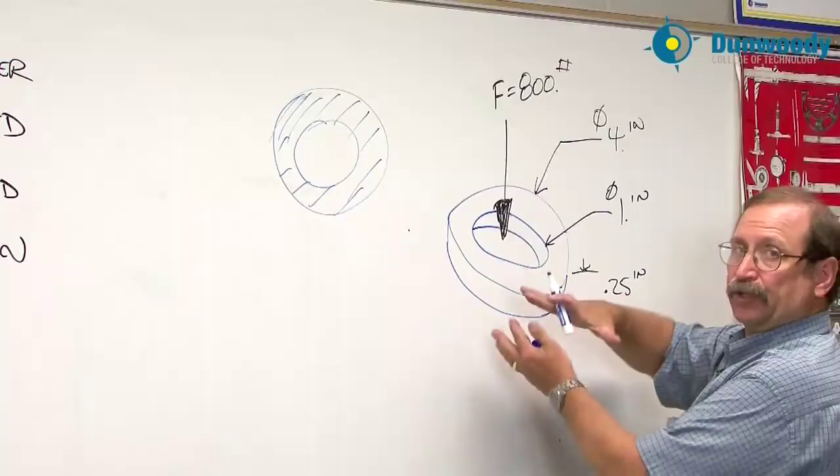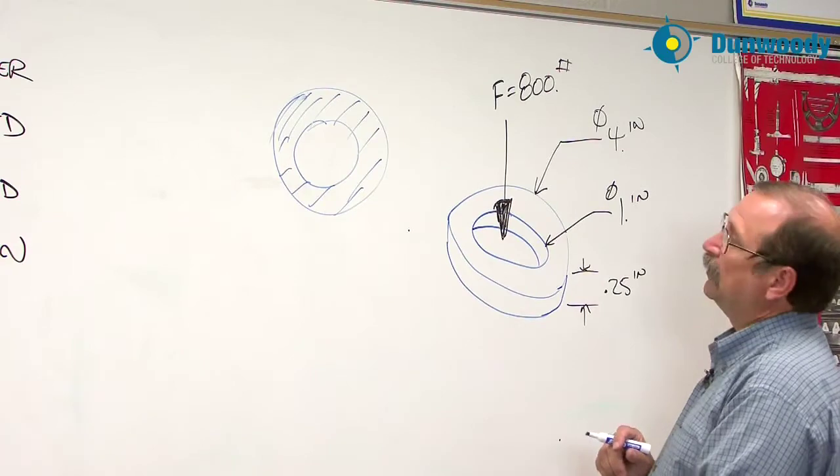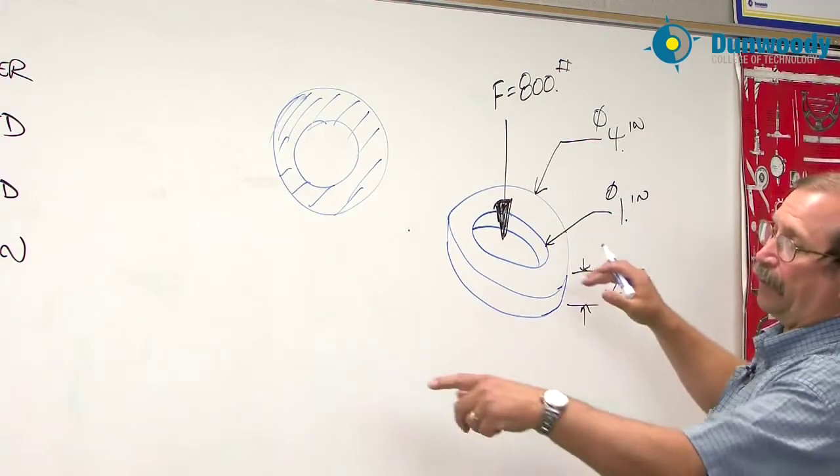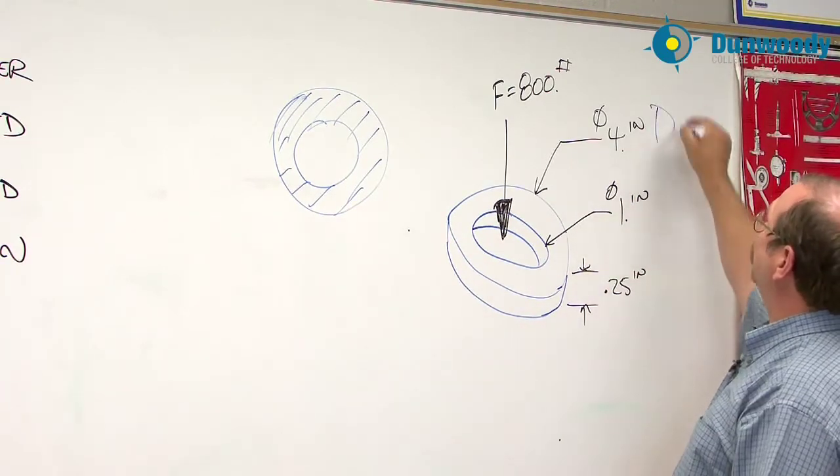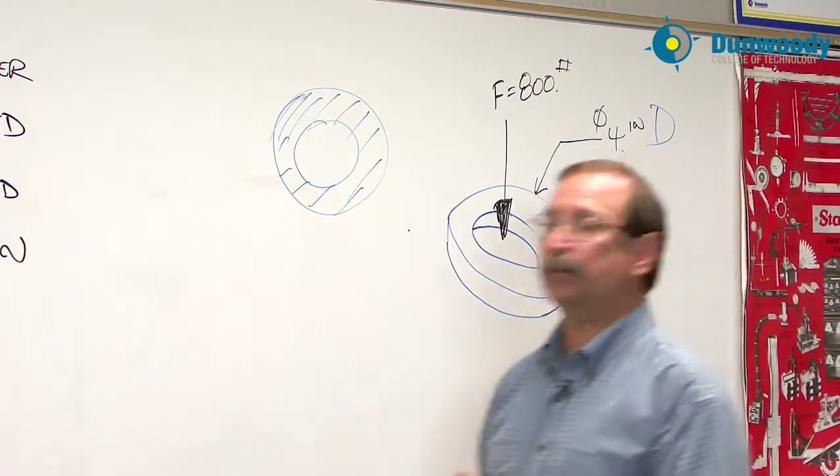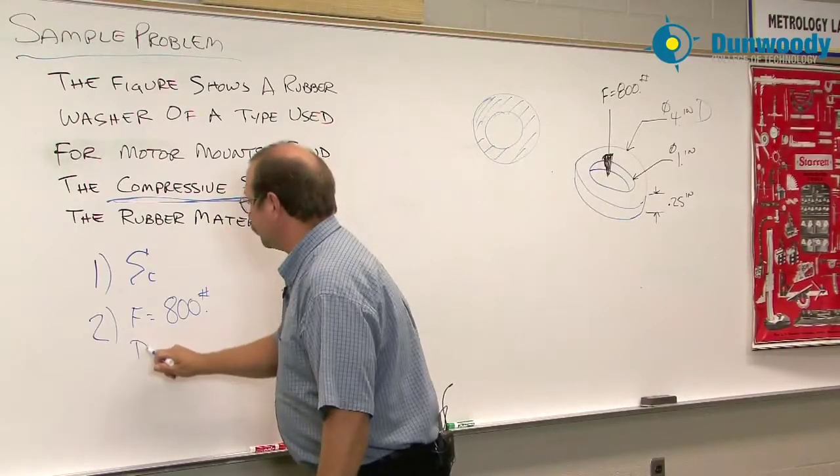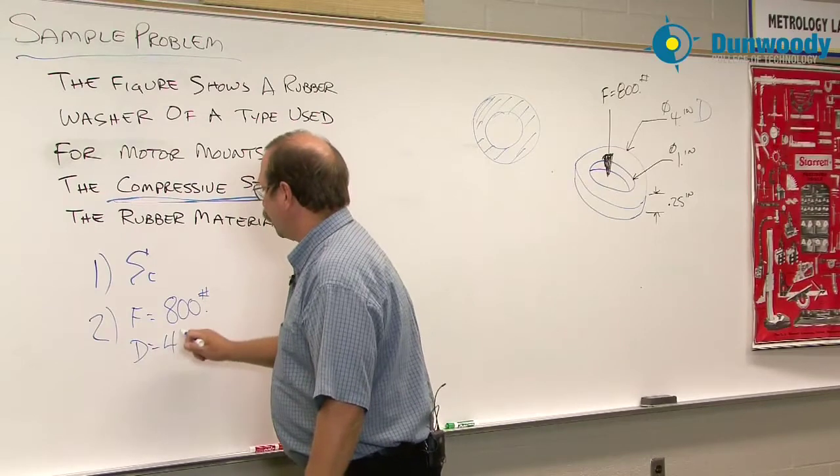So here we're just trying to make the material squeezed shut. So some of the different other variables that we have is that we're going to use a capital D for the large diameter. So bring that capital D over here. And that's four inches.